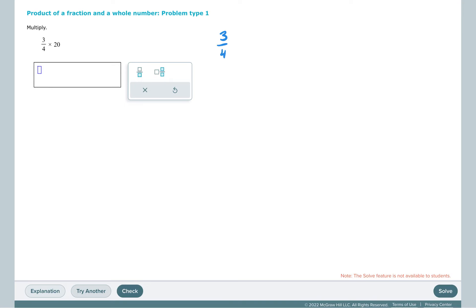There's a couple of different ways to approach this problem, 3 fourths times 20. One way is to change 20 into an improper fraction, and as an improper fraction, 20 would be 20 over 1.